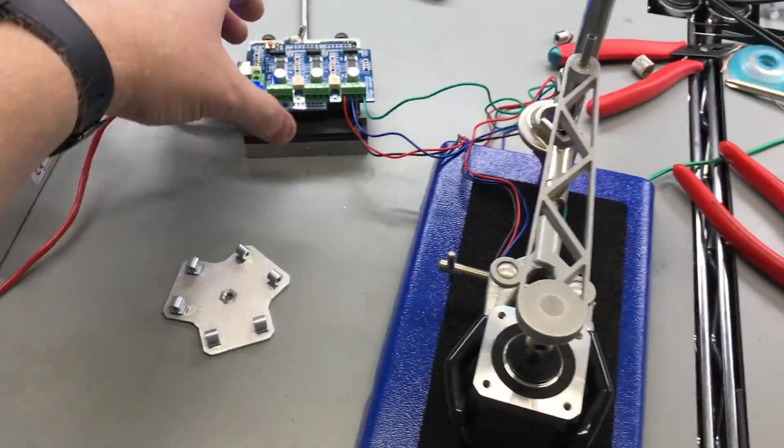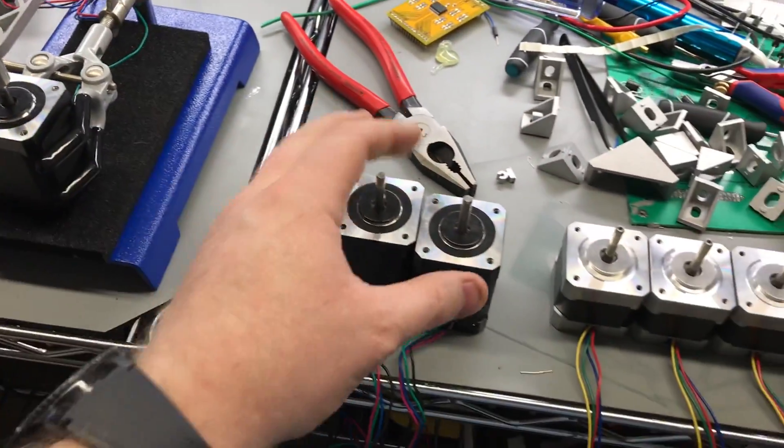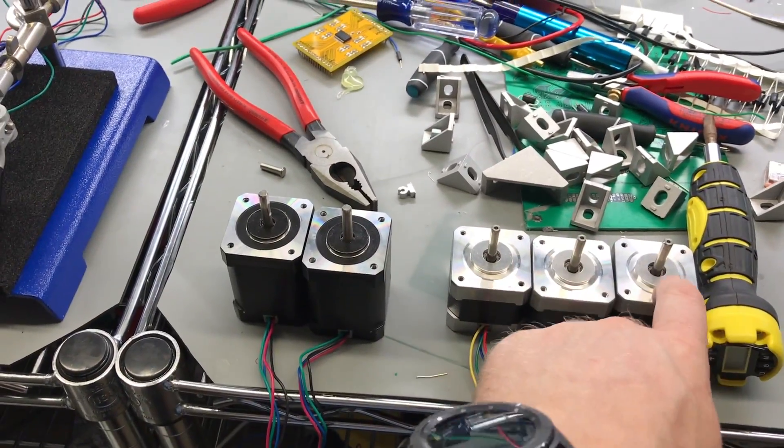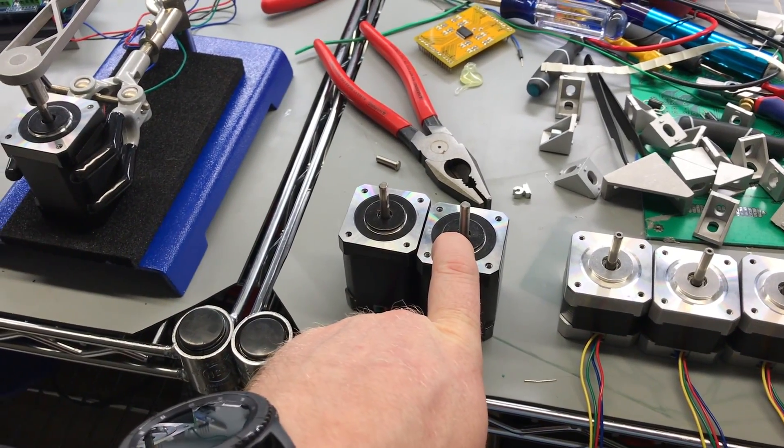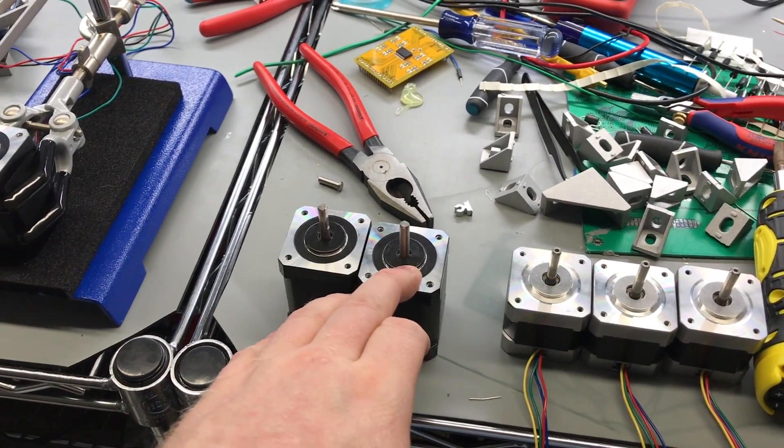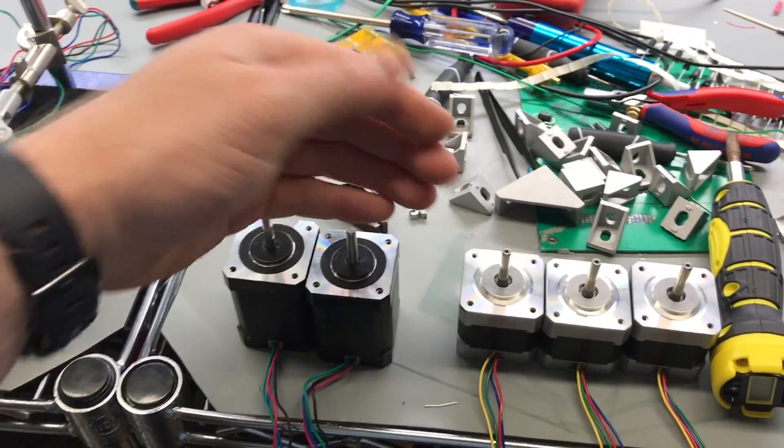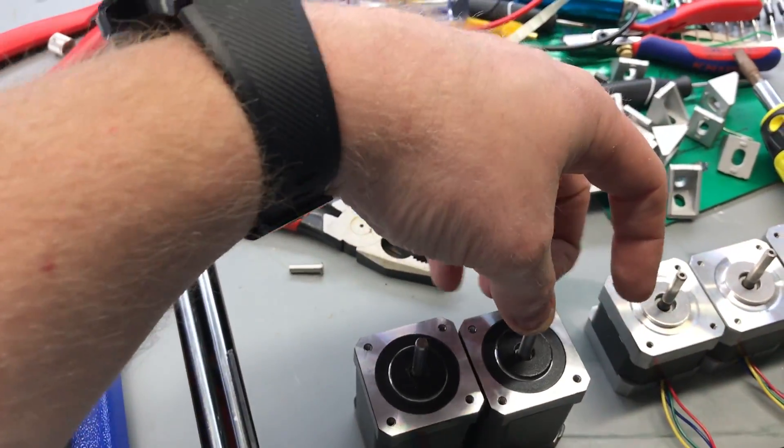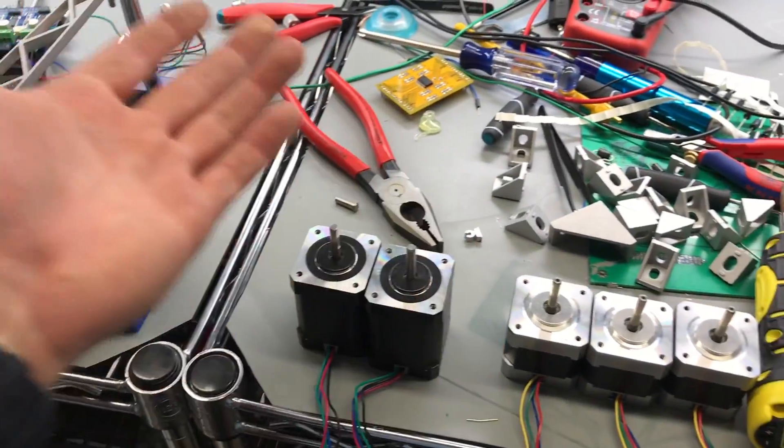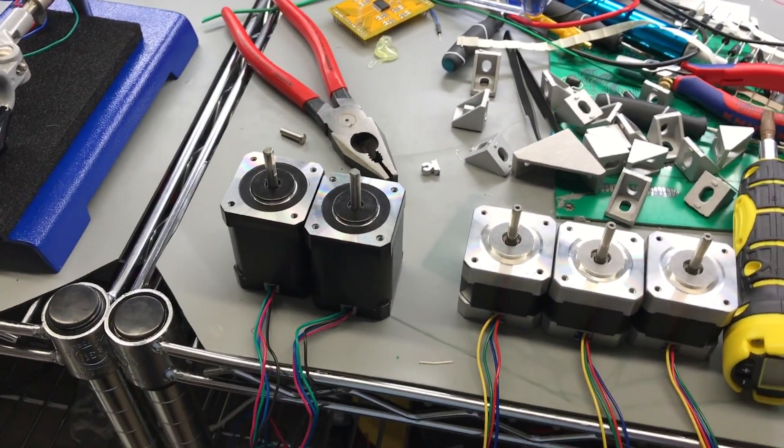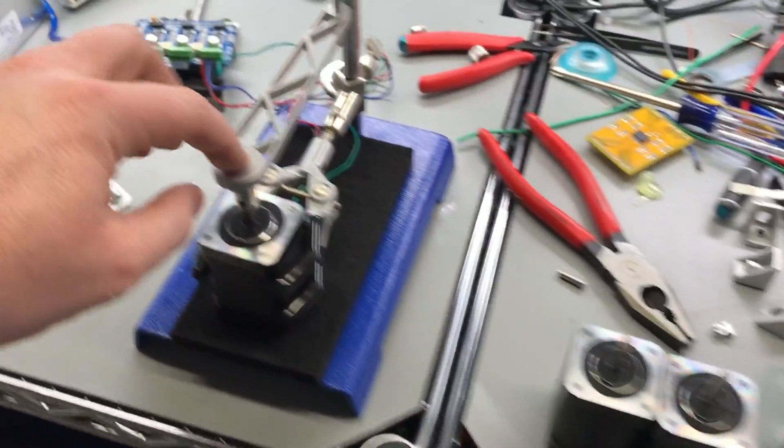So these motors are definitely an upgrade to these. These are about 60 ounce inches and these are 92 ounce inches. When you see specs on stepper motors, that basically means this can hold a 92 ounce load one inch from the center line of the shaft. You'll sometimes see them as Newton centimeters or Newton meters.